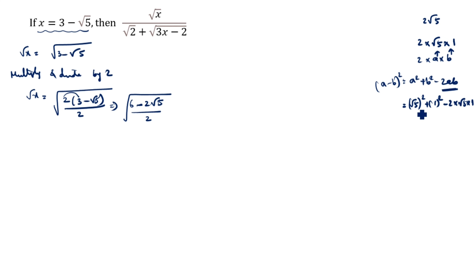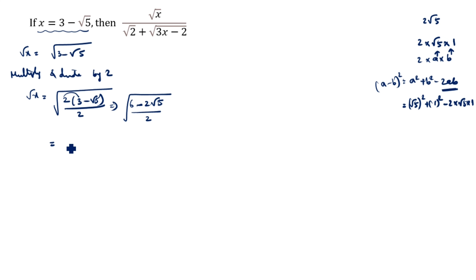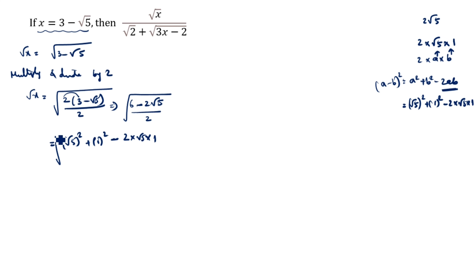√5² gives 5, plus 1 is 6. So 6 minus 2√5 equals √5² plus 1² minus 2·√5·1, which confirms the 6 value. So we split (6 minus 2√5) as (√5² plus 1² minus 2·√5·1) divided by 2.